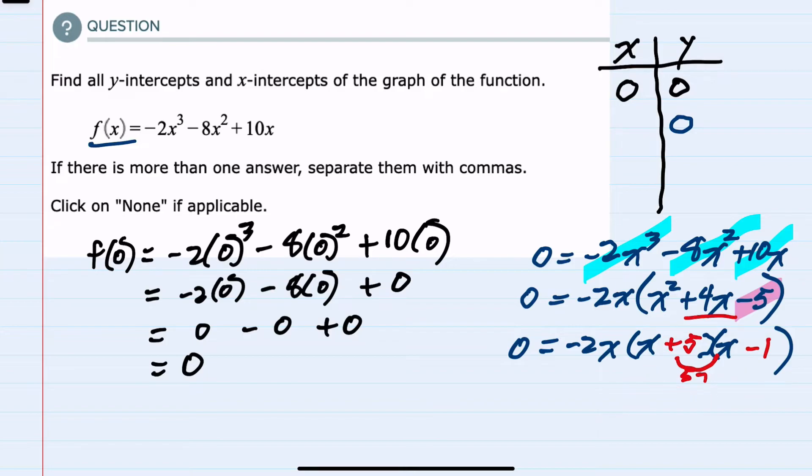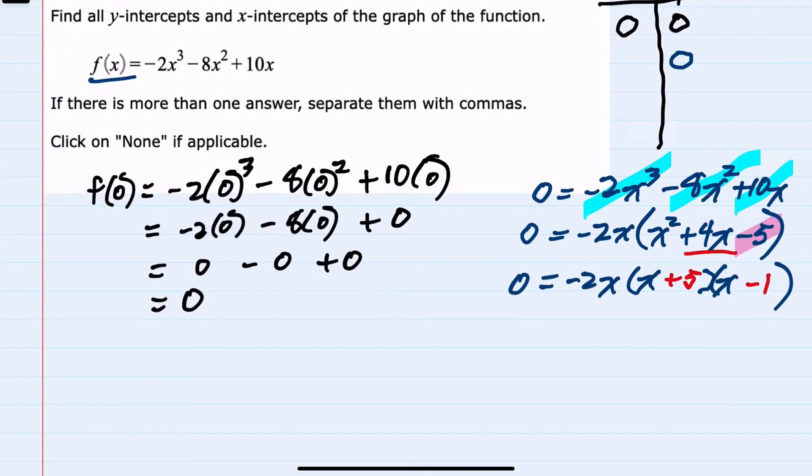I can see here that there are three terms being multiplied that equals zero. So either that first term negative 2x is equal to zero, or the second term x plus 5 equals zero, or the third term x minus 1 equals zero.